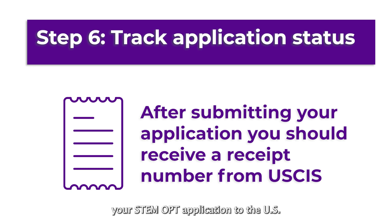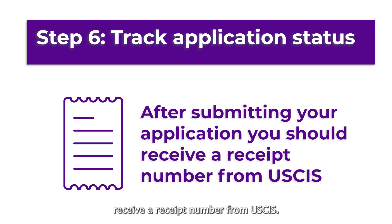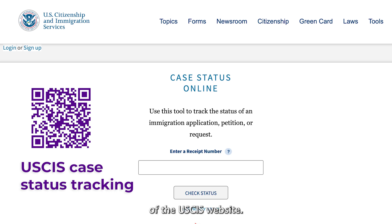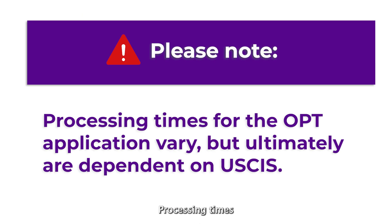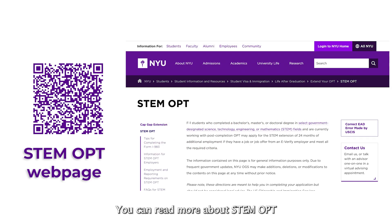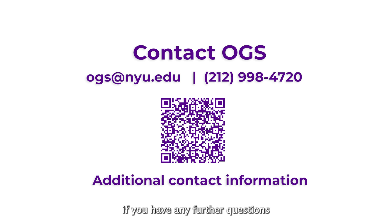Step 6: Track your application status. Once you have submitted your STEM OPT application to the US government, you should receive a receipt number from USCIS. You can use this receipt number to check your status on the USCIS website. Processing times for the OPT application vary but are ultimately dependent on USCIS. You can read more about STEM OPT on our website and should contact OGS if you have any further questions about the STEM extension.